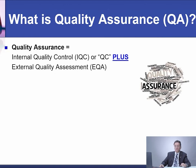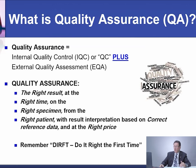What is quality assurance? Quality assurance means internal quality control plus external quality assessment — another name for it is PT. Another definition for quality assurance is the right result at the right time, on the right specimen, from the right patient, with result interpretation based on correct reference data, and at the right price (the right price is optional). Remember DRIFT: Do It Right First Time.